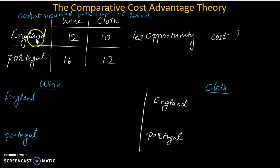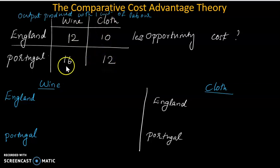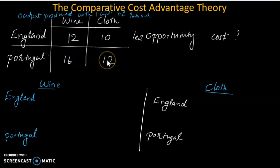England is producing wine 12 units and cloth 10 units. Portugal is producing wine 16 units and cloth 12 units. You can see that in Portugal, these two commodities have one absolute advantage.